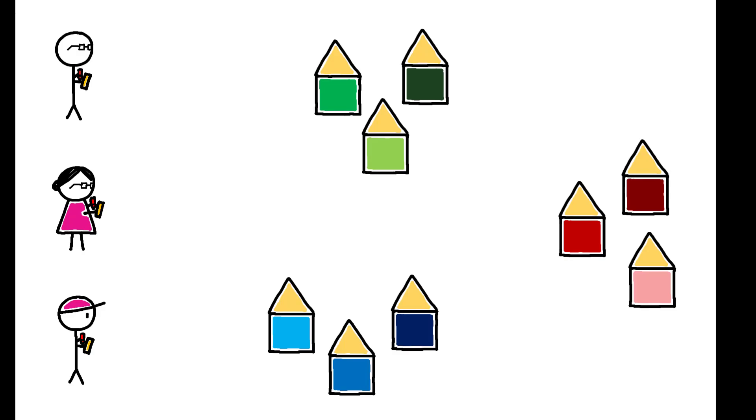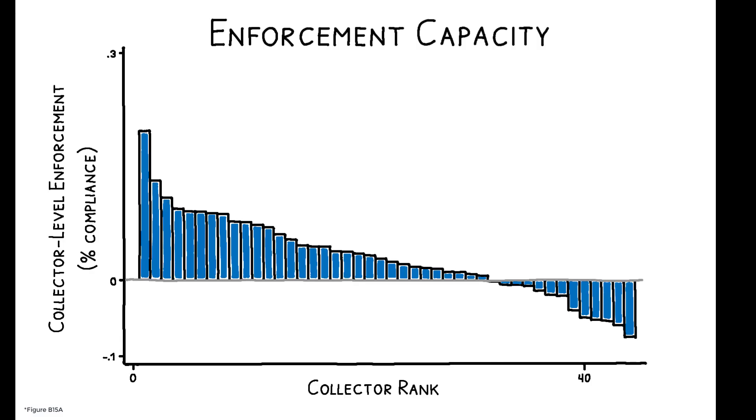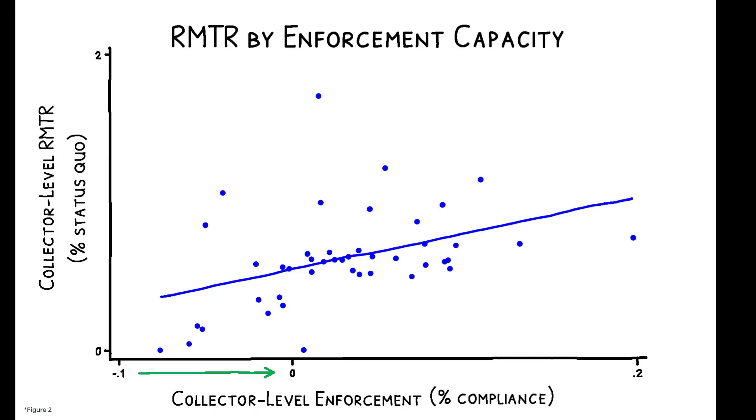To further explore this, the authors also exploit the random assignment of tax collectors to neighborhoods. Property taxes in Kananga are collected door-to-door, and individual collectors vary in their enforcement capacity. Some are systematically more skilled at collecting taxes than others. And the authors find that collectors with higher enforcement capacity also have higher RMTRs.